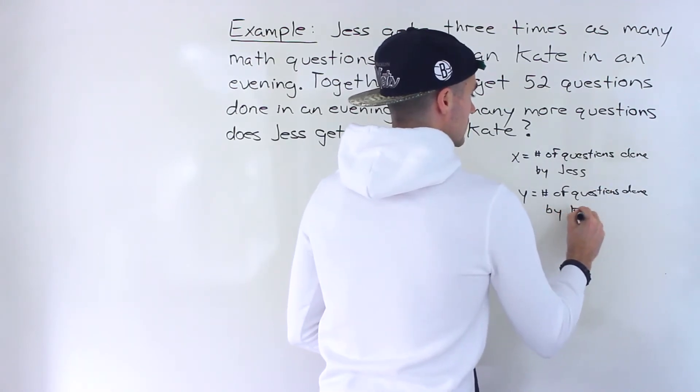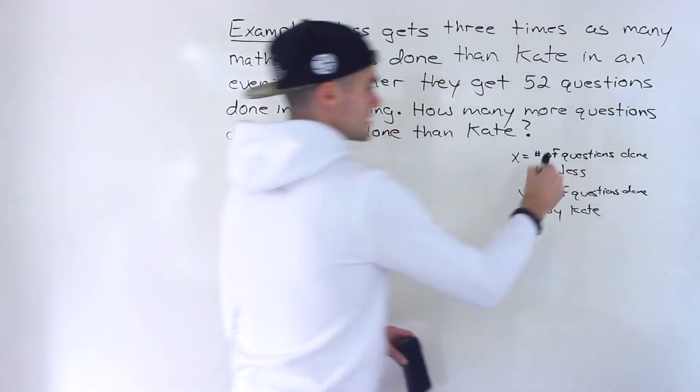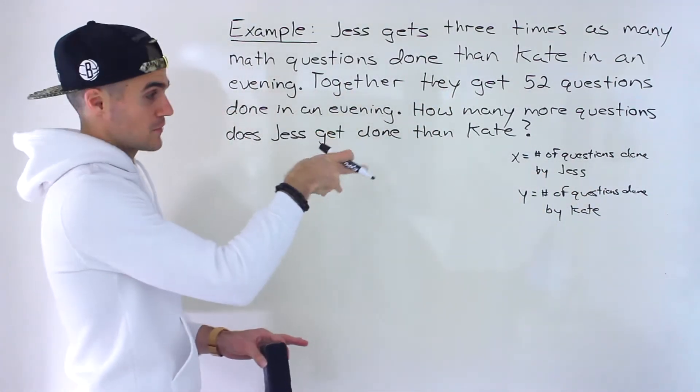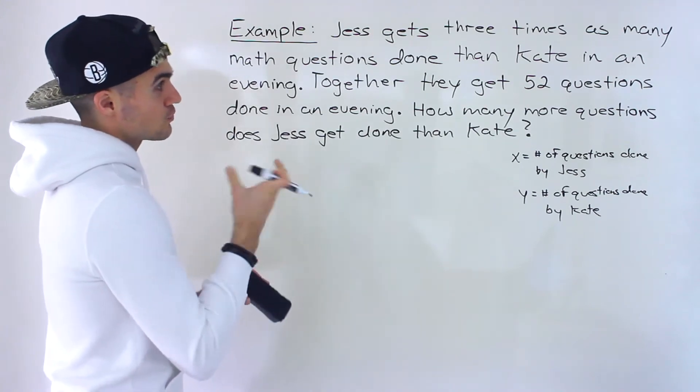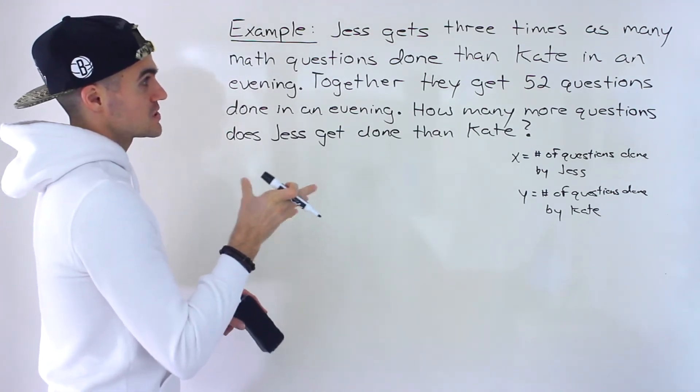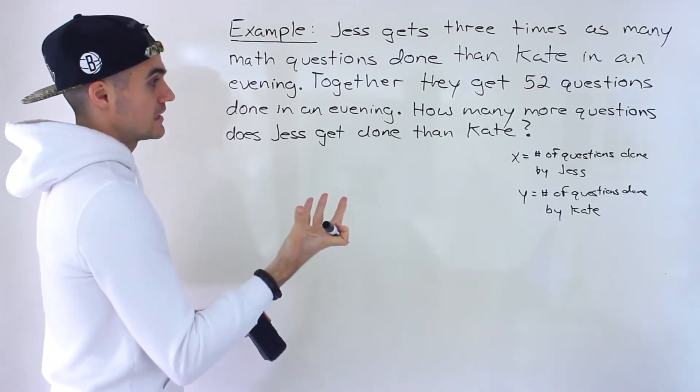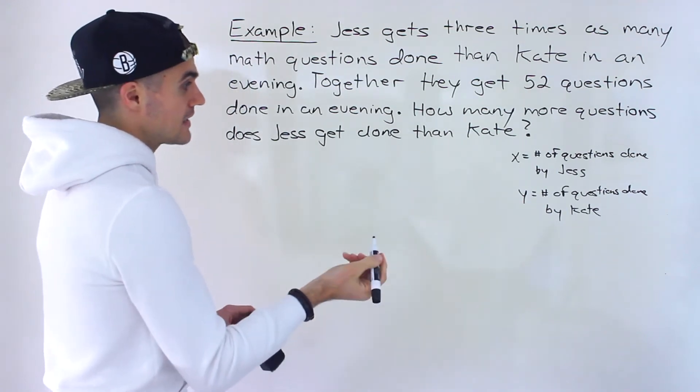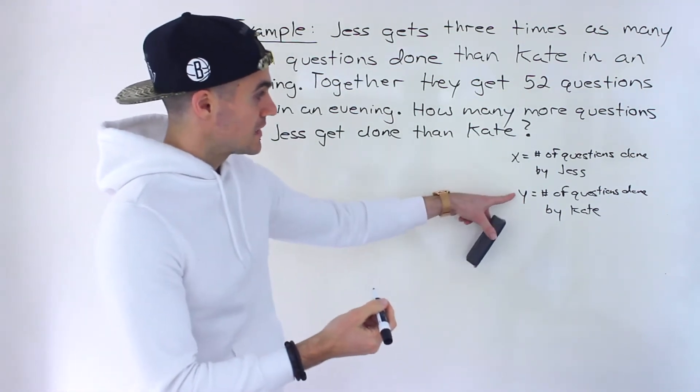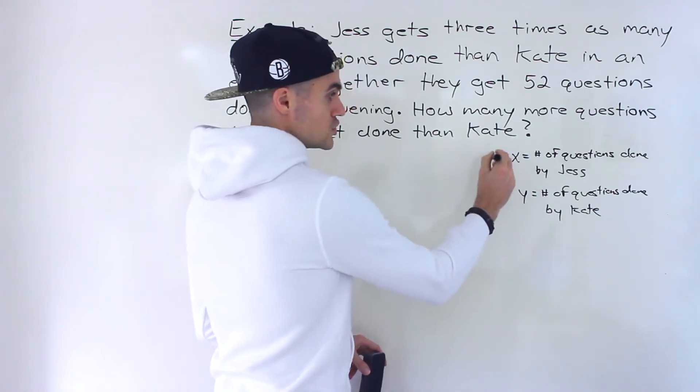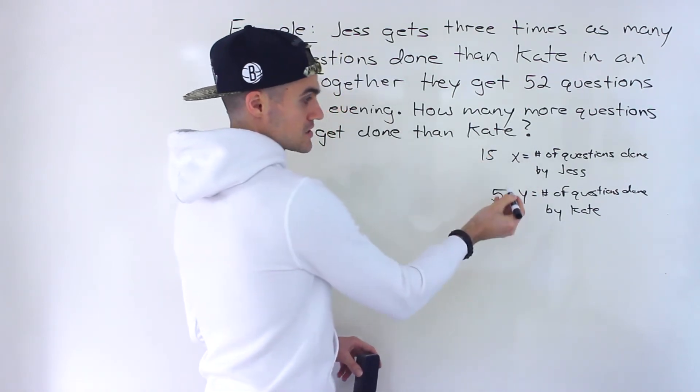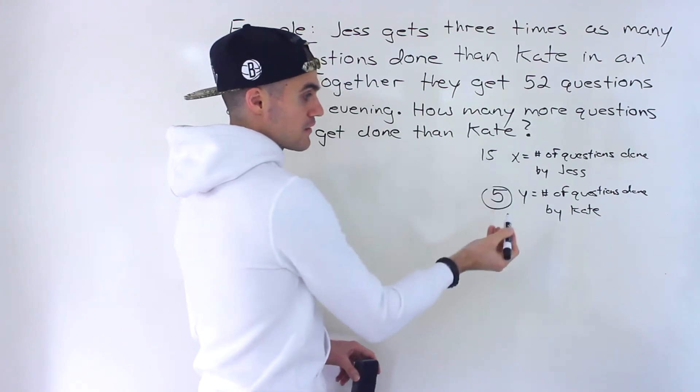We're going to create some equations from this information with those variables we introduce. So we're told that Jess gets three times as many math questions done than Kate in an evening. So if Kate gets five questions done, then Jess is going to get 15 questions done, right? You would just multiply this by three.